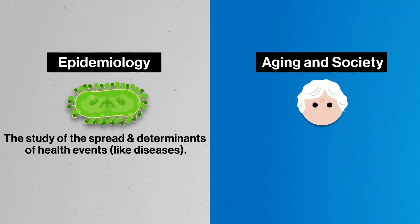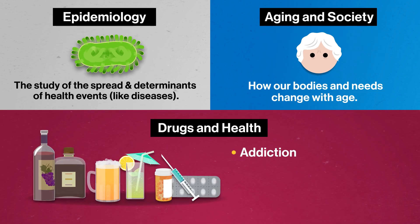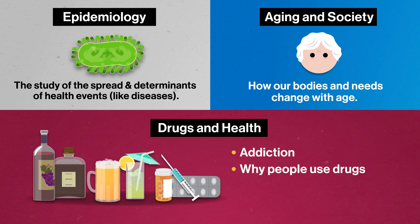You might take aging and society, if you want to learn about how our bodies and needs change with age. Or drugs and health, if you want to learn about addiction, why people use drugs, and effects of substance abuse on health and society. Some programs might also require that you do an internship, or get experience working in a professional setting, like a hospital or community health center, to earn your degree.